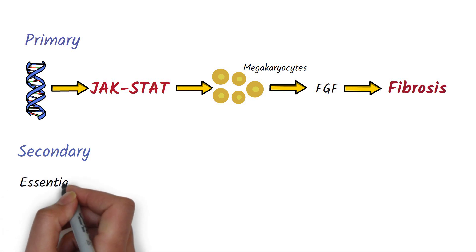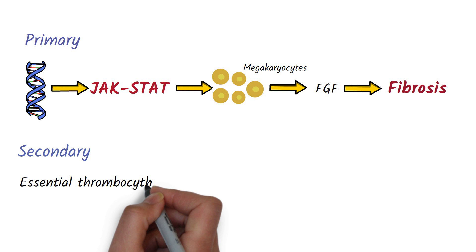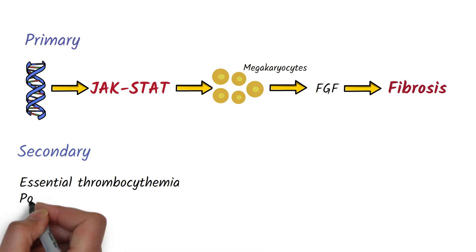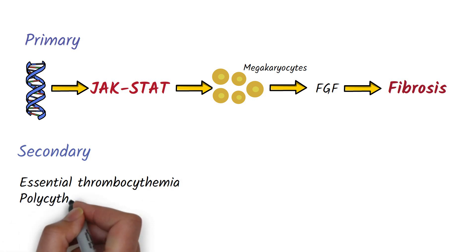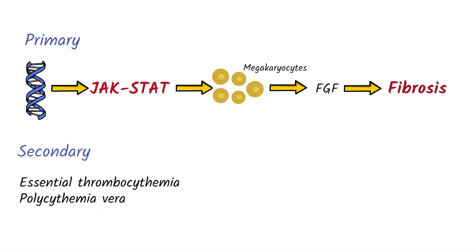Secondary myelofibrosis can be due to essential thrombocytopenia, where there is an excess of platelets, and polycythemia vera, where there is an excess of red blood cells.